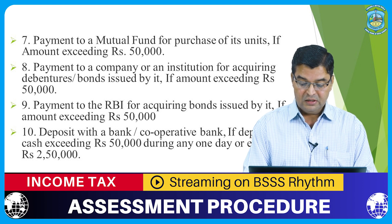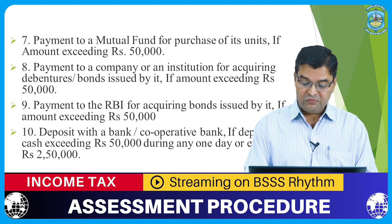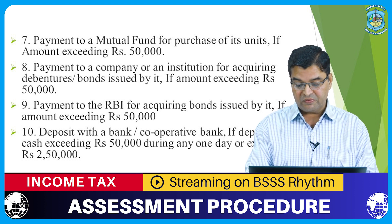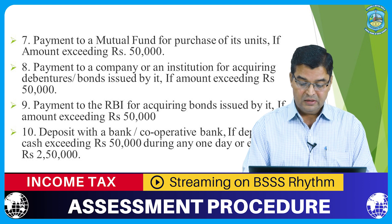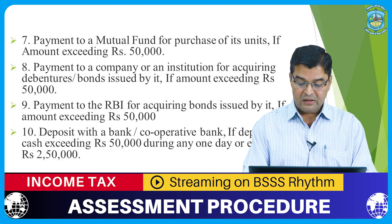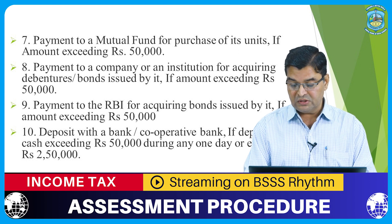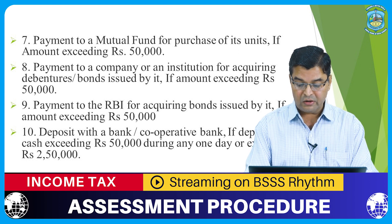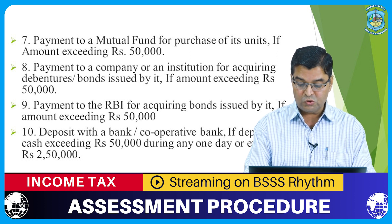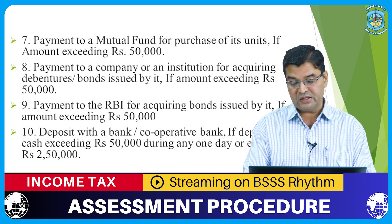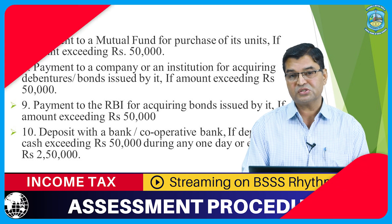Ninth: payment to the RBI for acquiring bonds issued by it if amount exceeds rupees 50,000. Tenth: deposit with a bank or cooperative bank if deposits in cash exceed rupees 50,000 during any one day, or exceeding rupees two lakh 50,000 during November 9, 2016 and December 30, 2016.